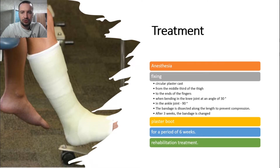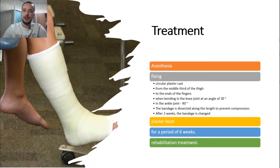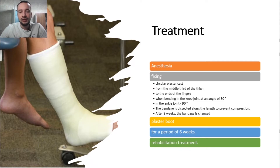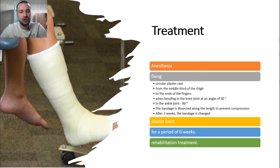The dislocation of the talus bone is confirmed on X-ray. Treatment: dislocation is eliminated under anesthesia immediately after diagnosis, due to the danger of skin necrosis in the area of the talus bone. The limb is fixed with a circular plaster cast from the middle third of the thigh to the ends of the fingers, with bending at an angle of 30 degrees in the knee joint and 90 degrees in the ankle joint. The bandage is dissected along its length to prevent compression.